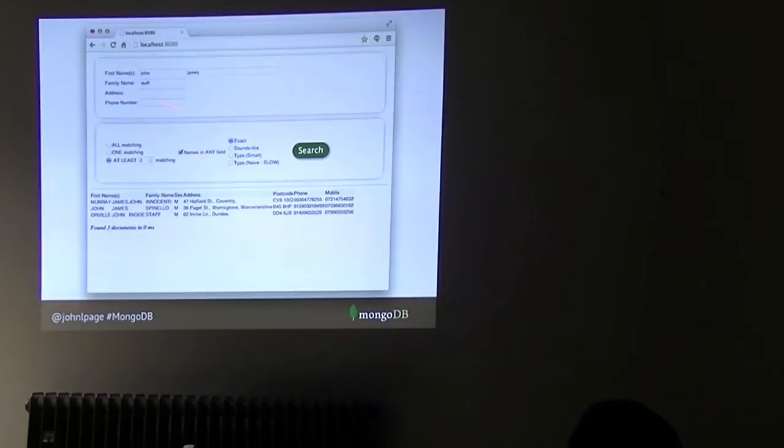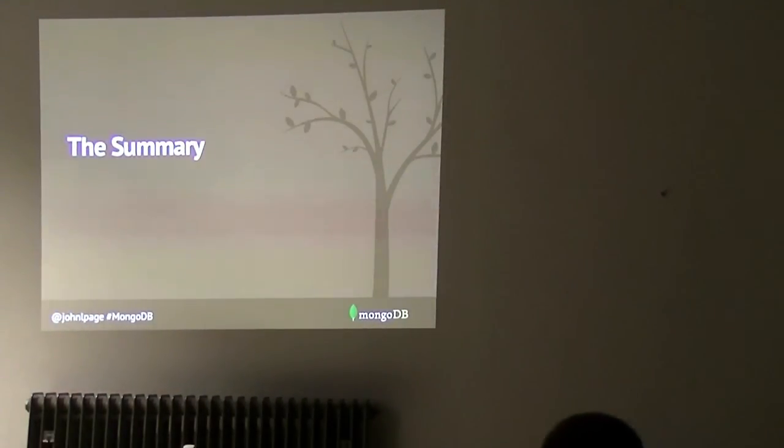And then finally, you project out the ID again and use that as a query. If you do this, you're able to do John James Staff at least two in any field. And I find Murray James John Innocetti, James John Spinello, and Orville John Ricky Staff. So given two names which could have been in any field, and it could have been two names, three names, and finding any two of three, I'm able to find those results. And again, it comes back in less than one millisecond. It's a very efficient technique for doing this on a good set of data.